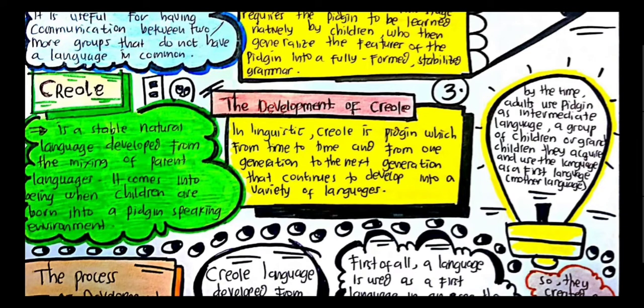For the development of Creole: in linguistics, Creole is a pidgin language that, from time to time and from one generation to the next, continues to develop into a variety of languages. The development of Creole may arise in one of two basic situations: one is where speakers of pidgin are put in a situation where they cannot use their respective mother tongue, and the second is where a pidgin is regarded by a social group as a higher language variety and is deliberately cultivated.